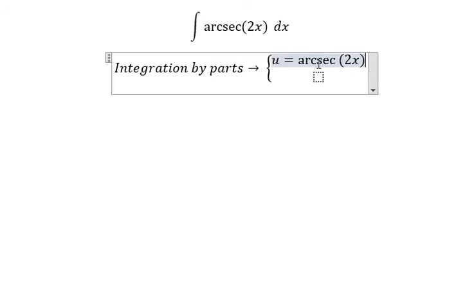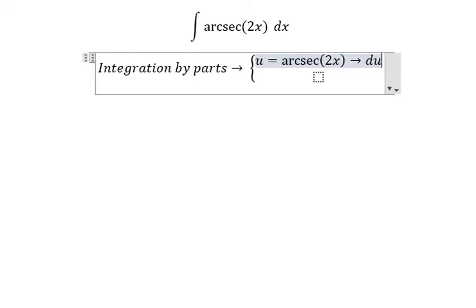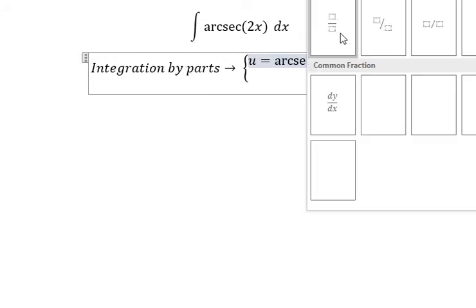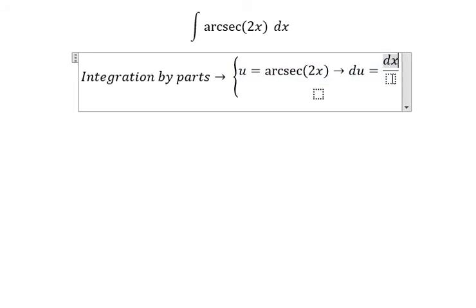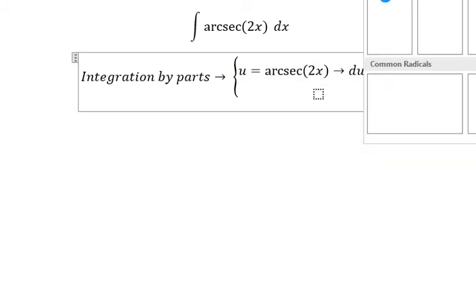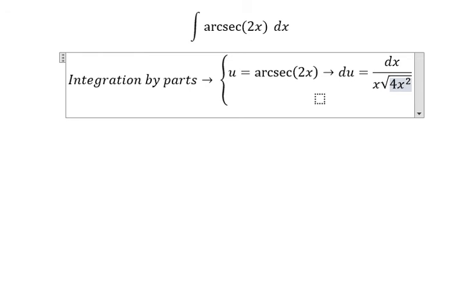u equals arcsecant of 2x. If we do the first derivative, du equals dx over x multiplied with the square root of 4x squared minus 1.